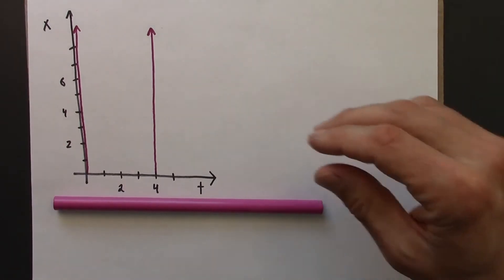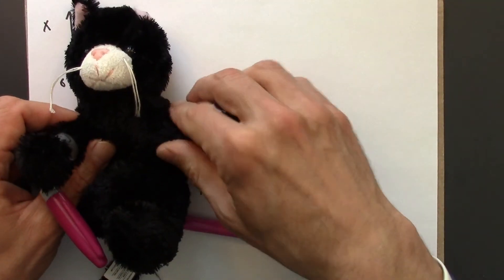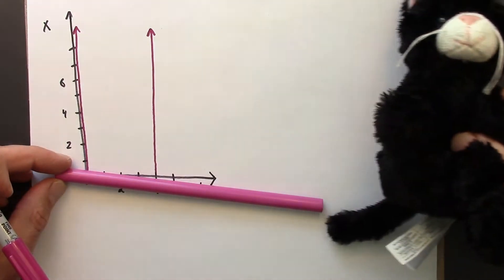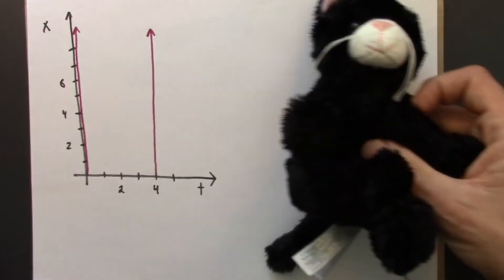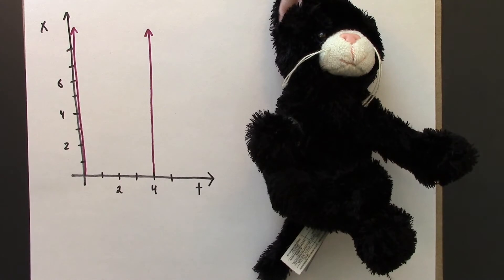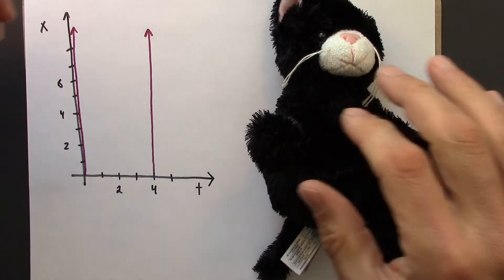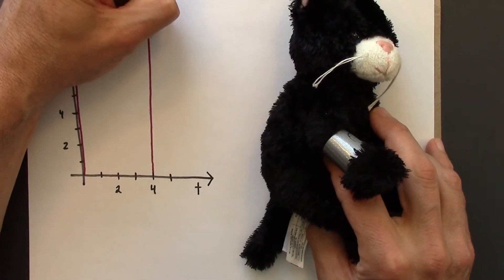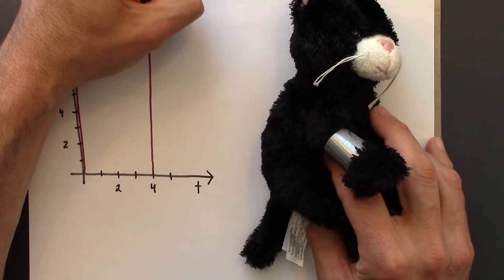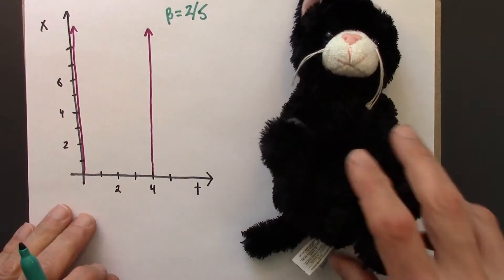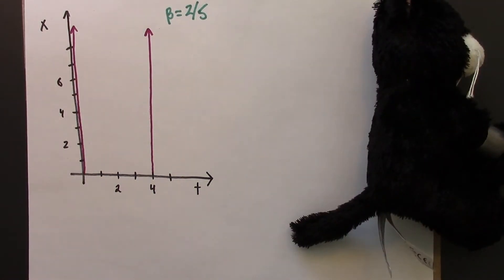But now, what would Beowulf think about this? Beowulf is going to be moving at a speed of 2 fifths to the right. So let's make a note of that. I'll put that up here, beta is 2 fifths. So let's draw a two observer diagram.